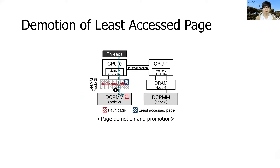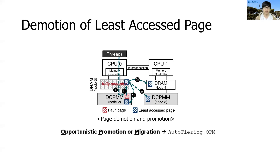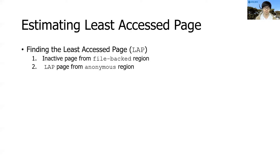I will explain how we select the victim page in the next slide. Once we select the victim page, we can migrate the page to either the remote upper-tier, the local lower-tier, or the remote lower-tier memory. The target memory node is decided by order of access tier and locality. After evicting a page, we can complete the promotion from the local lower-tier memory to the local upper-tier memory. We call this scheme auto-tiering with opportunistic promotion or migration, shortly auto-tiering OPM. Since such page migration incurs significant performance overheads, we opportunistically perform the page promotion and migration.